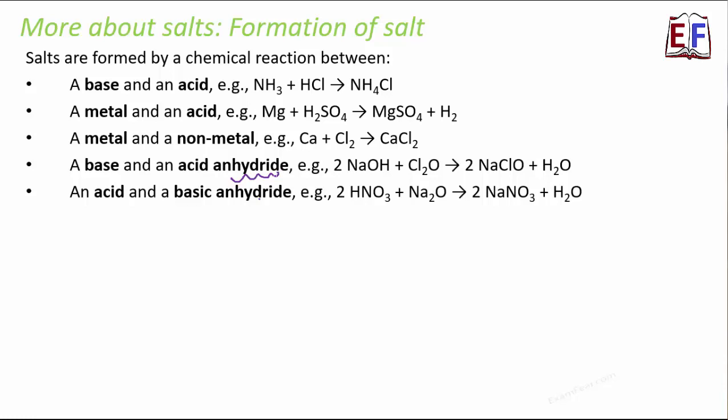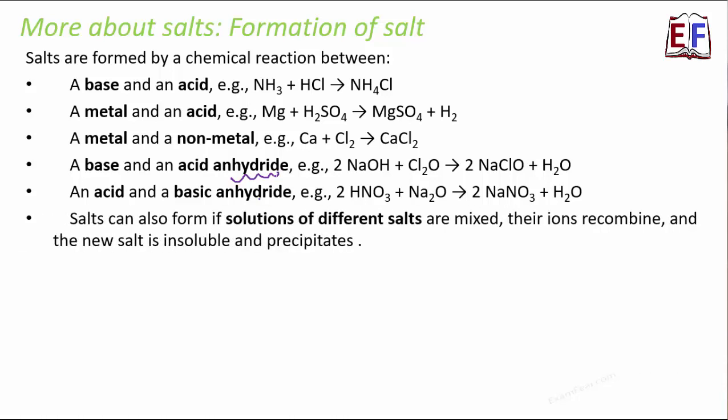When you remove H2O from an acid, it becomes acid anhydride. When you remove H2O from a base, it becomes basic anhydride. If you look at these reactions, you see that with all of these reactions, the end product is a salt. We see that salts can form if solutions of different salts are mixed, their ions recombine and the new salt is insoluble and precipitates. There are multiple opportunities or multiple ways in which a salt can be formed.